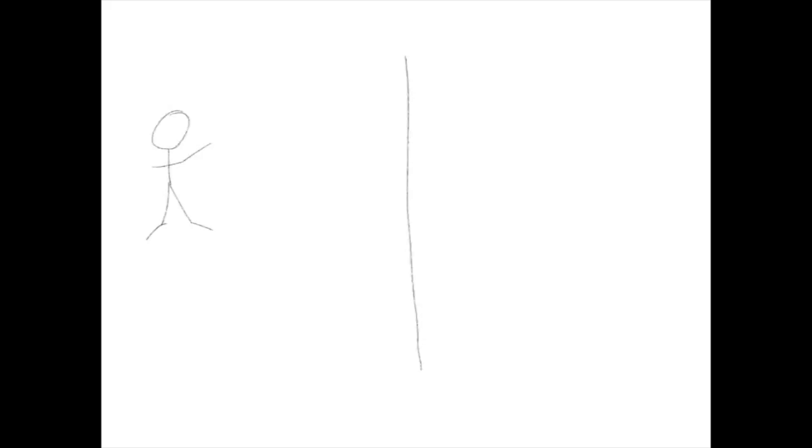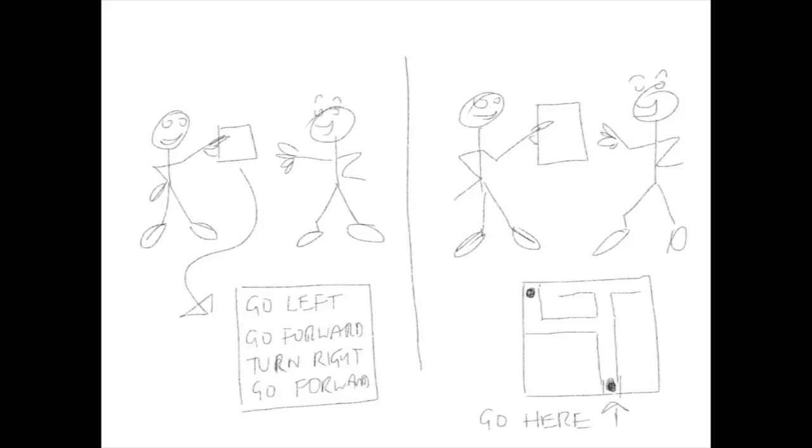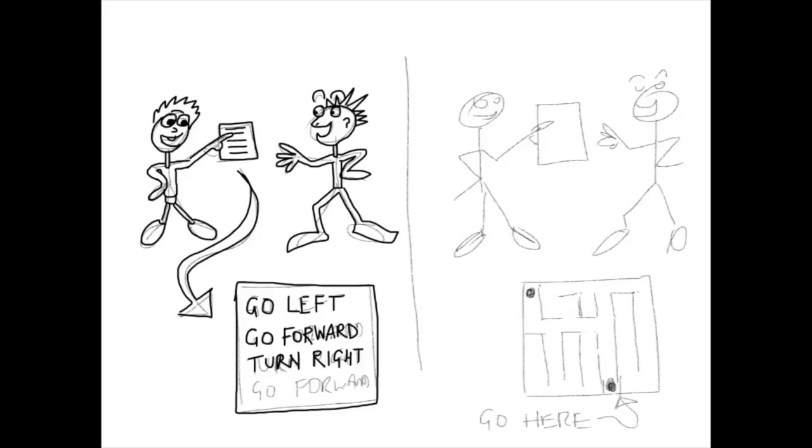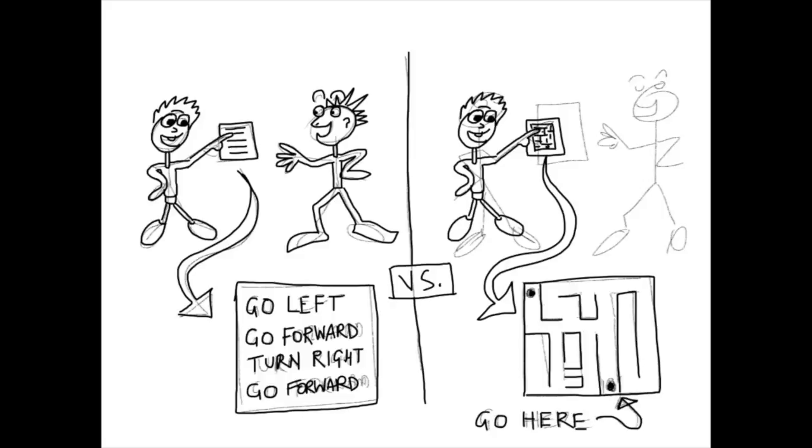Where other programming languages allow the programmer to tell the computer what to do, Haskell allows us to say what results we want from the computer. This is very similar to the difference between giving someone a set of steps to travel to get to a location, or giving them a map and marking the points on the map and asking them to find the path for themselves.